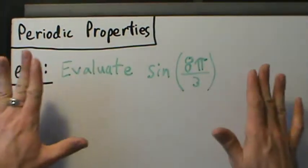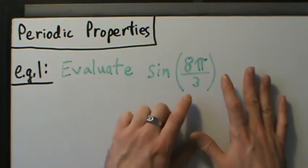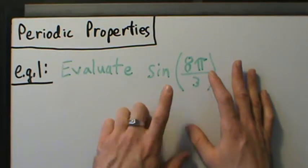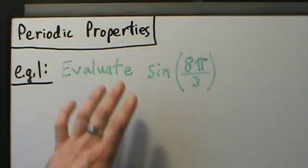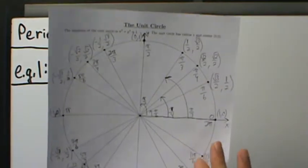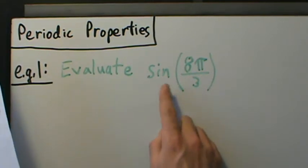We could use periodic properties to find an angle that's different from 8π over 3, but it's going to have the same sine as 8π over 3. The idea with periodic properties is you want to use these properties to find a different angle that's between 0 and 2π, that's somewhere on the unit circle, that has the same value at the trig function.